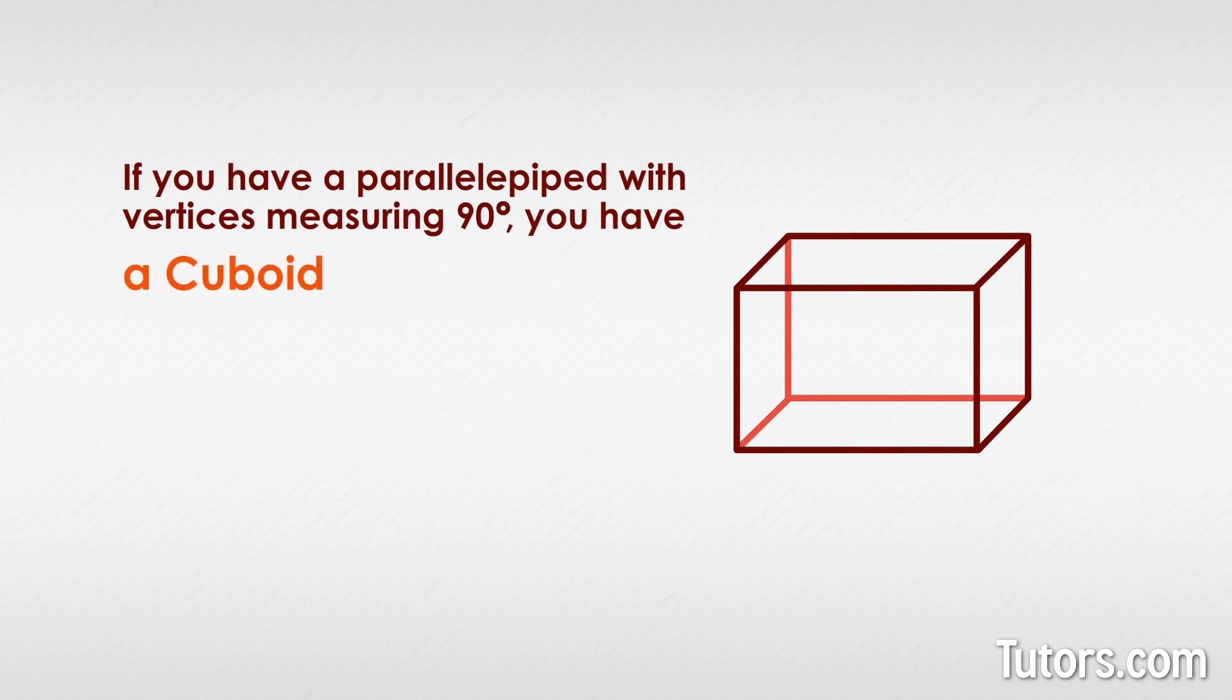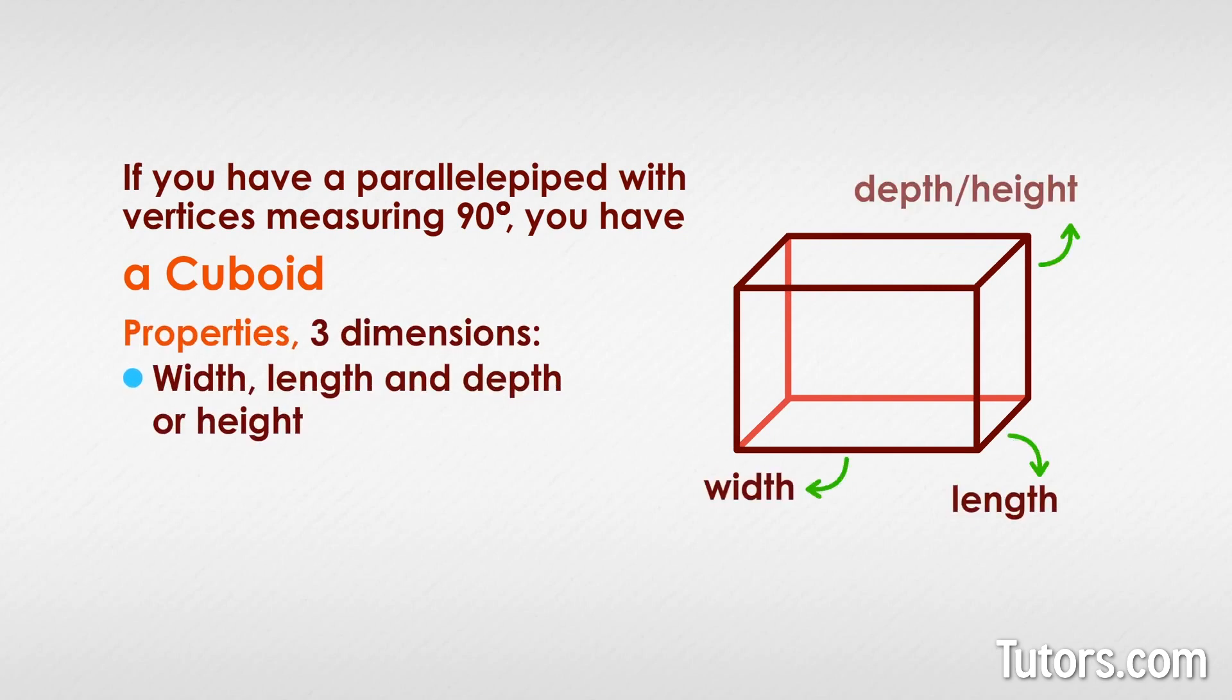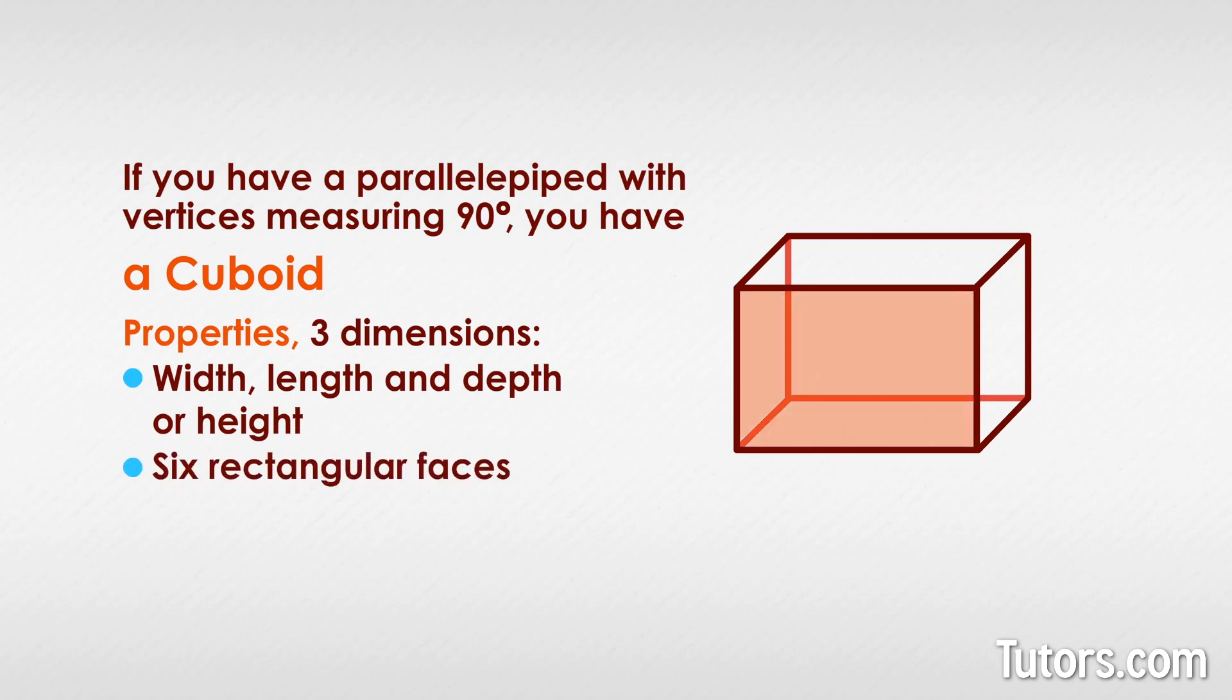All cuboids have these properties: three dimensions - width, length, and depth or height. Six rectangular faces. All vertices are 90 degrees.